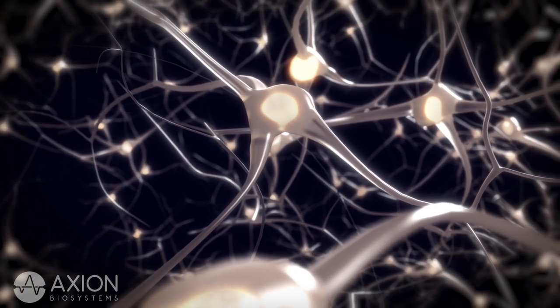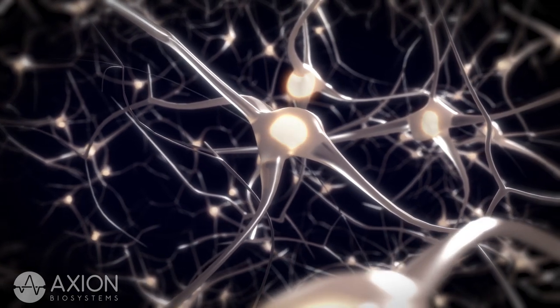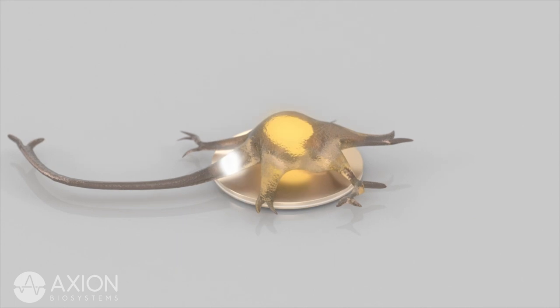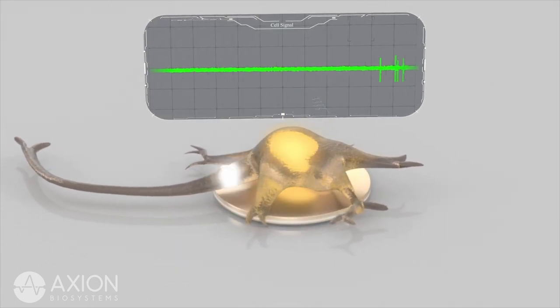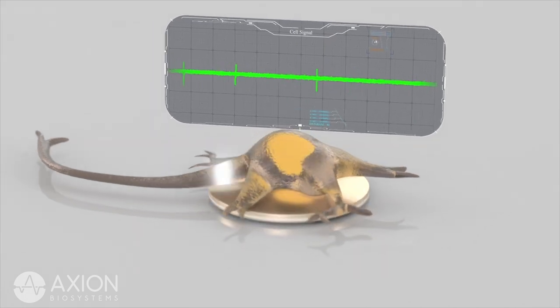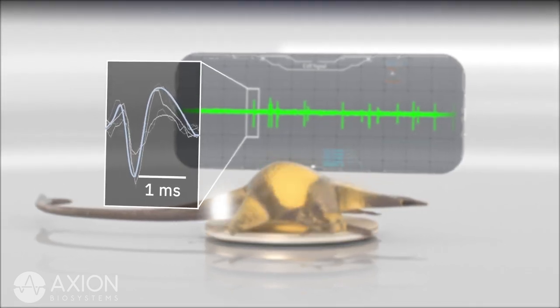Neurons form spontaneous networks as they branch out and communicate across synapses. MEA electrodes are sensitive enough to detect the activity of individual neurons. The signal shown here represents the voltage over time from a single electrode. Each time the neuron above fires an action potential, a spike appears in the signal.